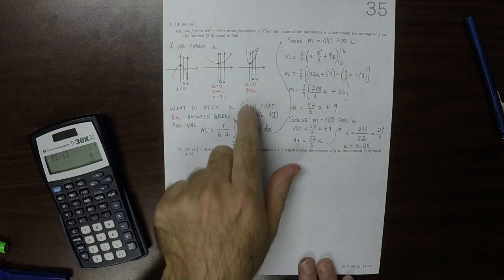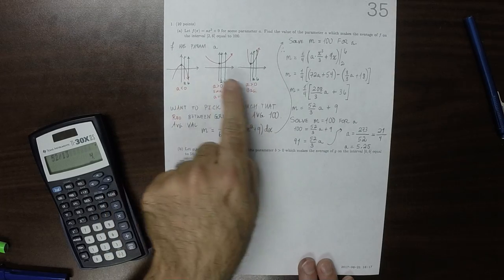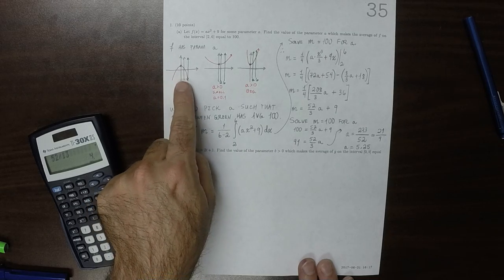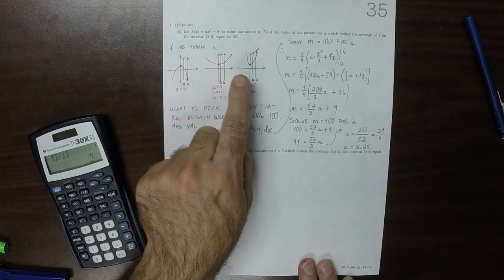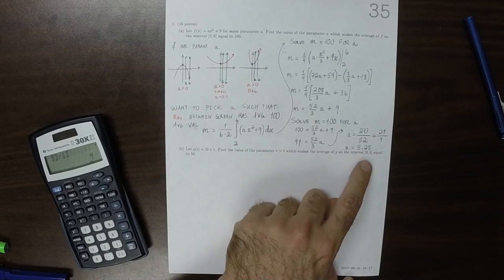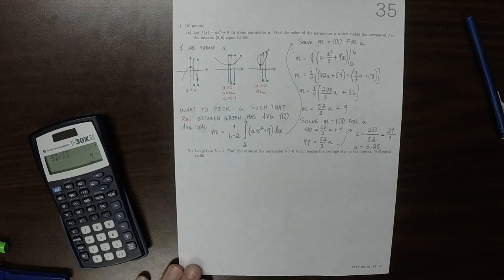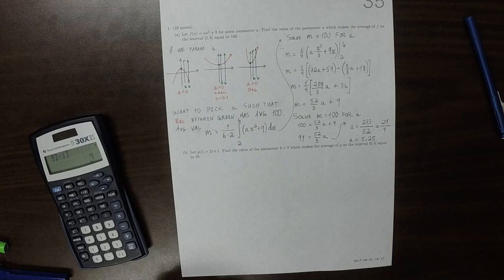So that means that of these three possible choices, this one is most nearly the right choice. Not a parabola that opens down, not a parabola that opens up but really shallow. Rather, we want a parabola that opens up kind of steeply with leading coefficient 5.25.